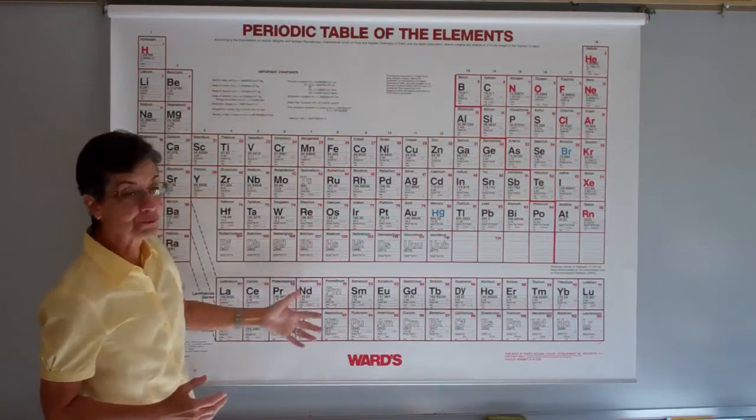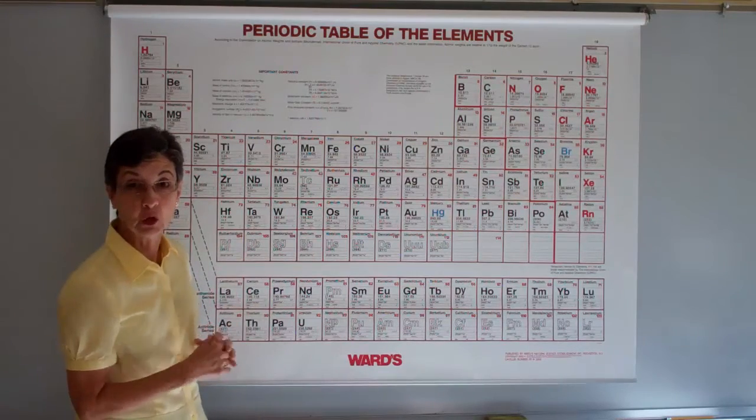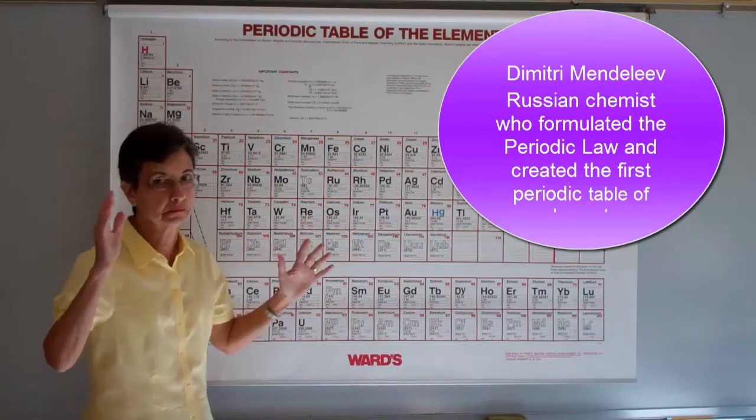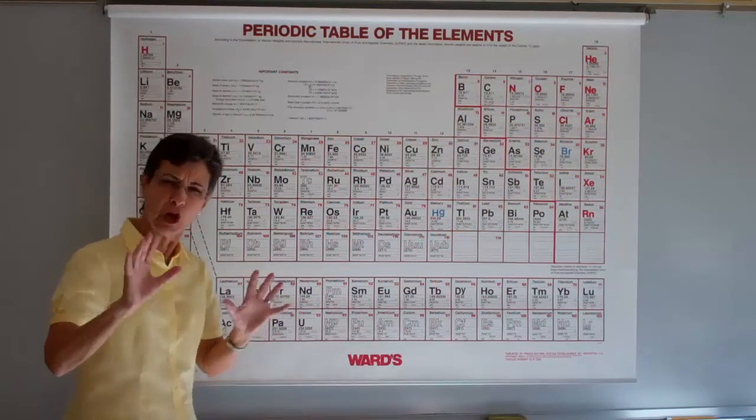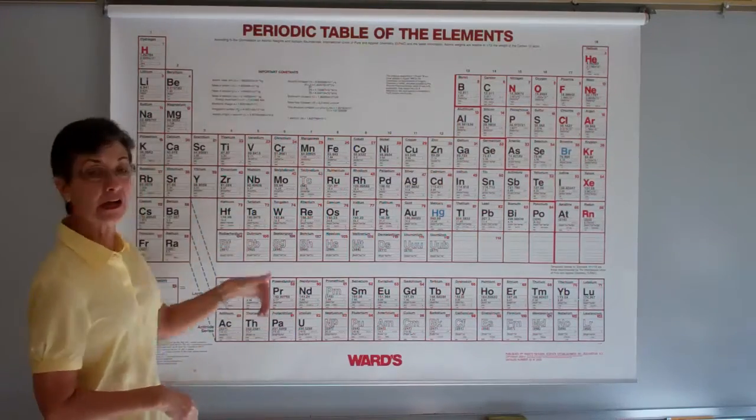Now, these elements are placed in this Periodic Table, by the way, by a fellow by the name of Mendeleev, very smart guy, organized. But we'll talk more about that a little later on. For now, let's focus on a couple of things. Alright, the colors. Take a look at the colors.